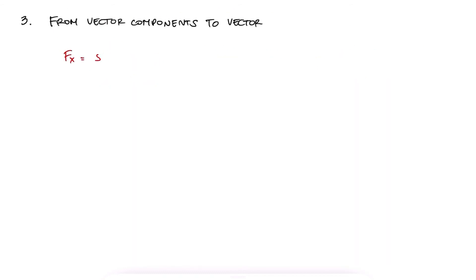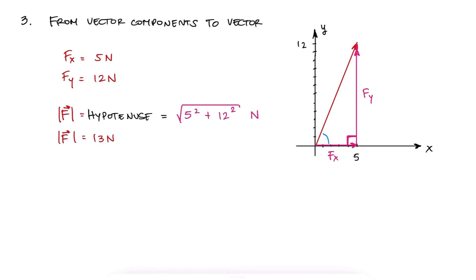Given the components of a vector, we can also find the vector's magnitude and direction. Since the components are orthogonal, meaning that they form a 90 degree angle between them, we can use Pythagoras to find the hypotenuse, which would be the magnitude of the vector.